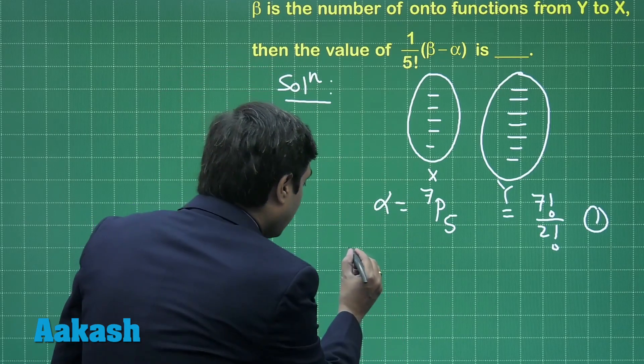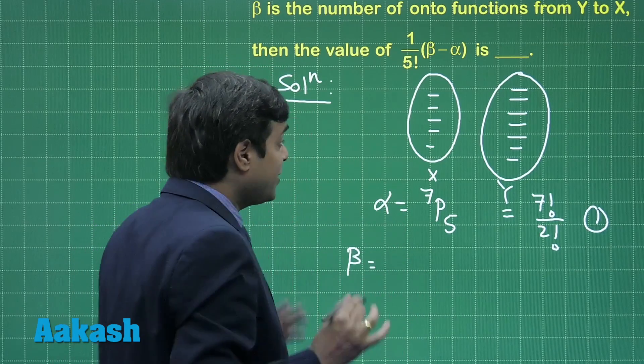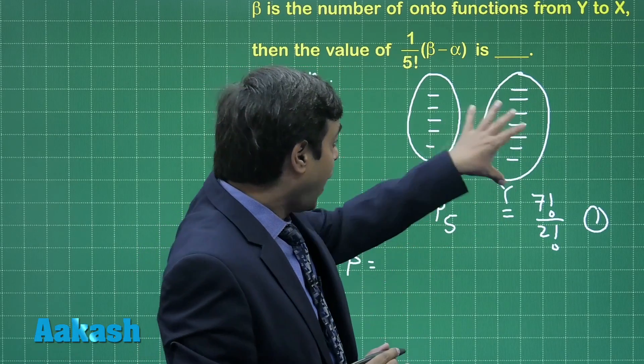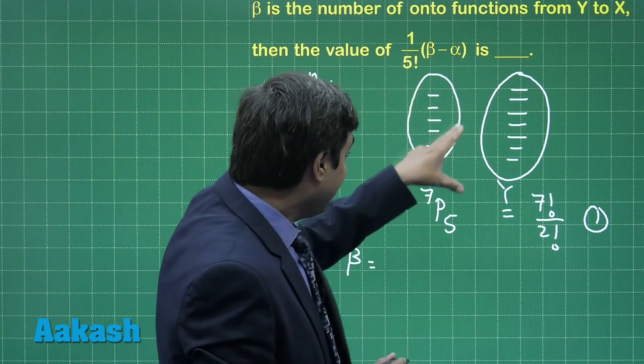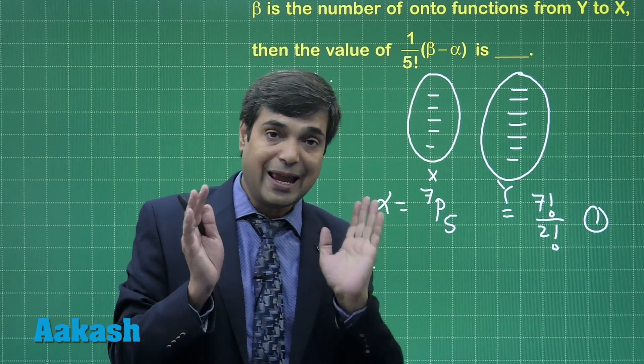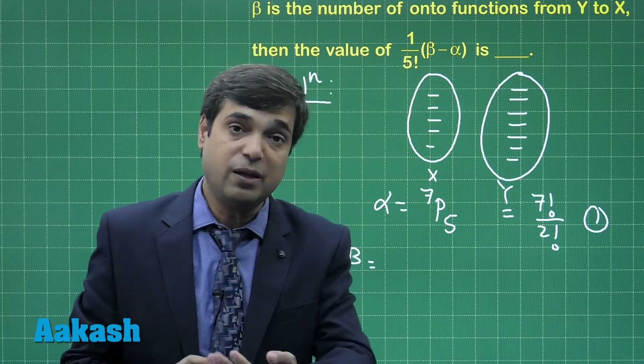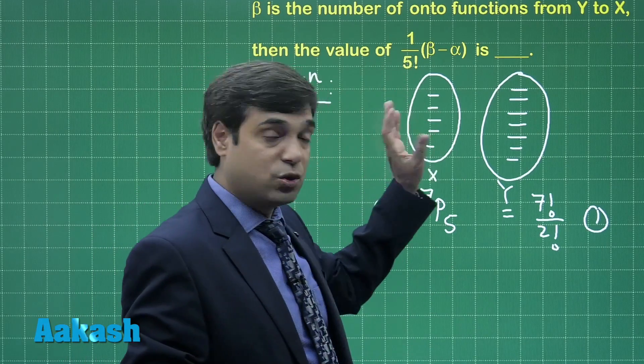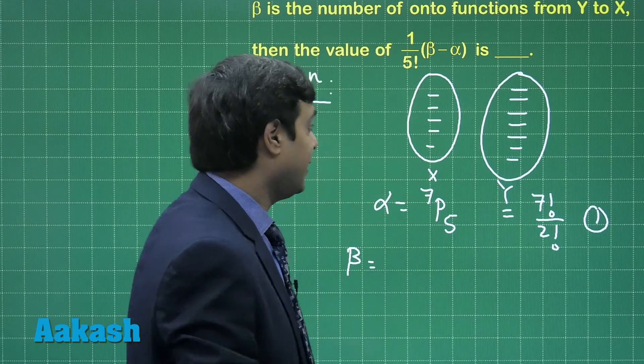Next, beta is number of onto functions from Y to X, meaning in X there should not be any element which is not having any pre-image in Y. How we can group these 5 so that no substitution is there.